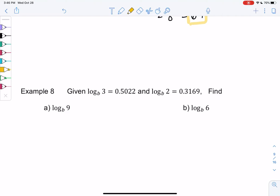And log base b of 2 is 0.3169. So let's find log base b of 9 and 6. So basically what I need to do is I need to rewrite in terms of 3 or 2. Because that's the only ones I know.